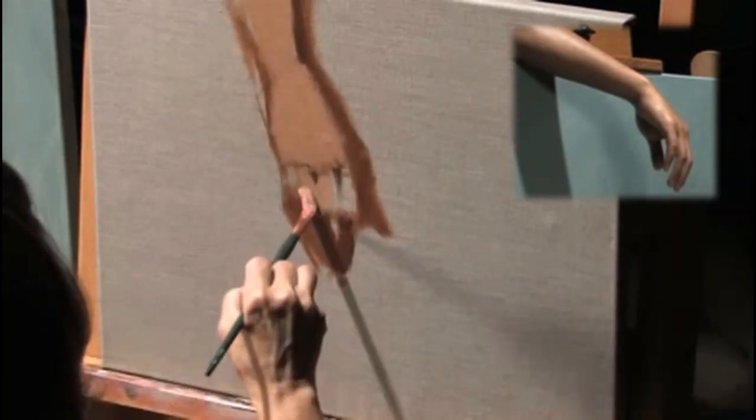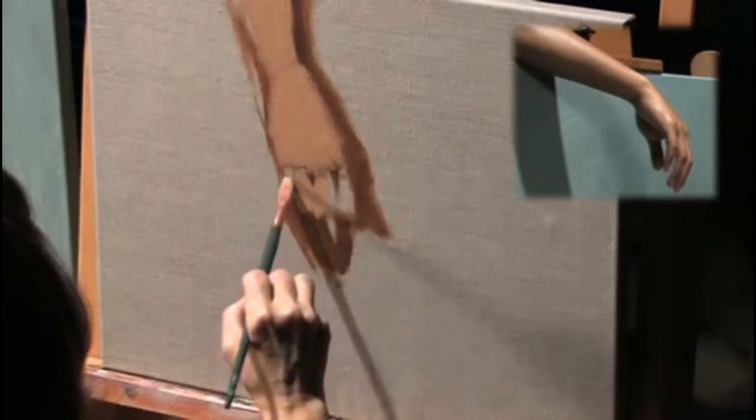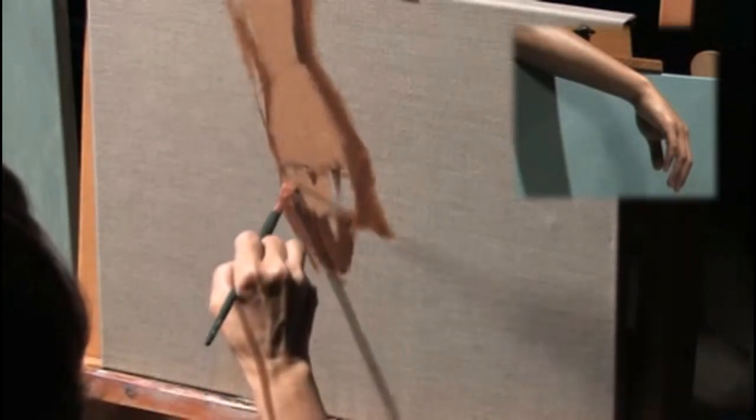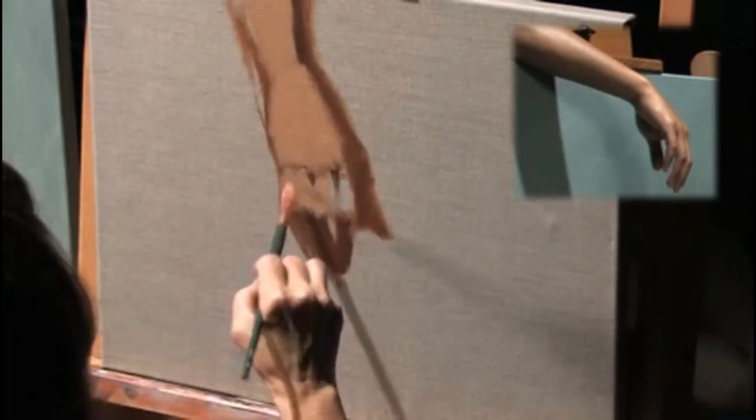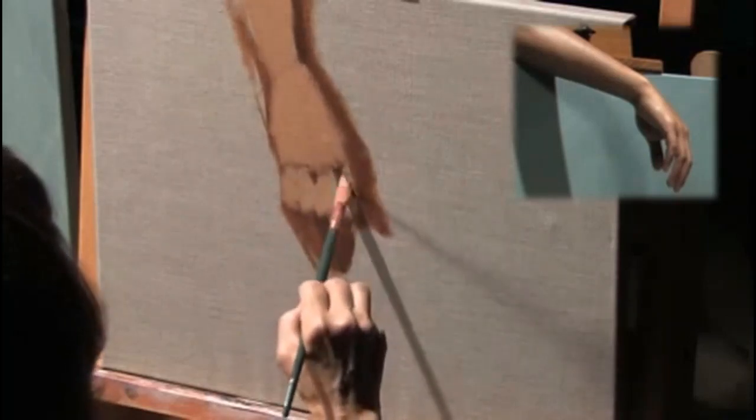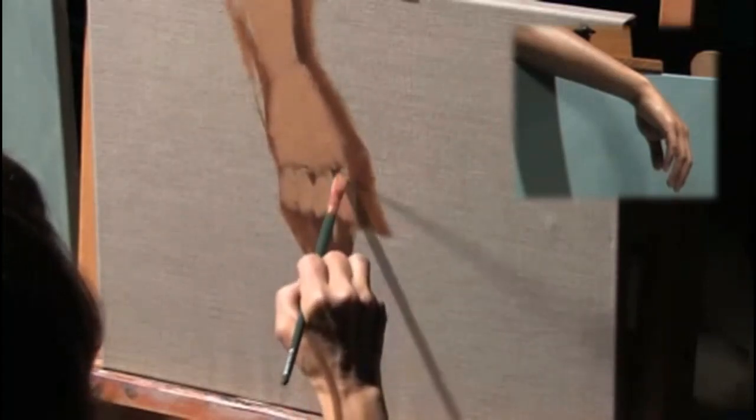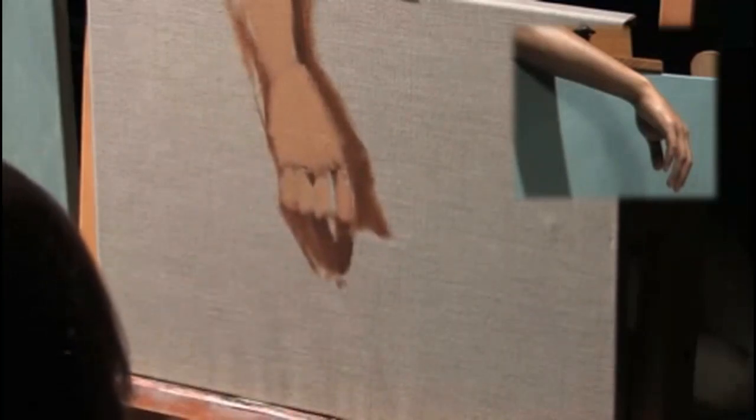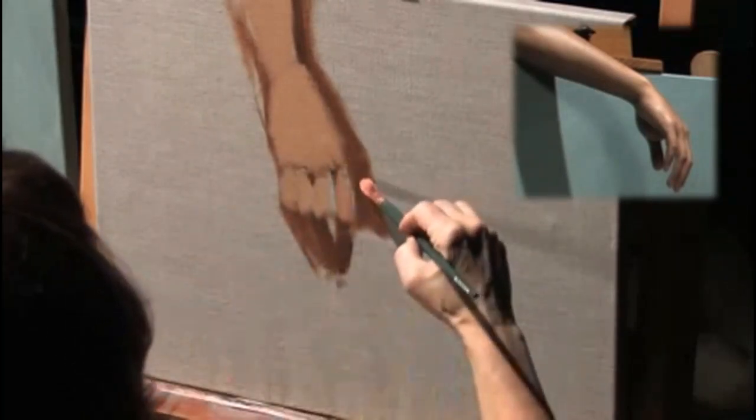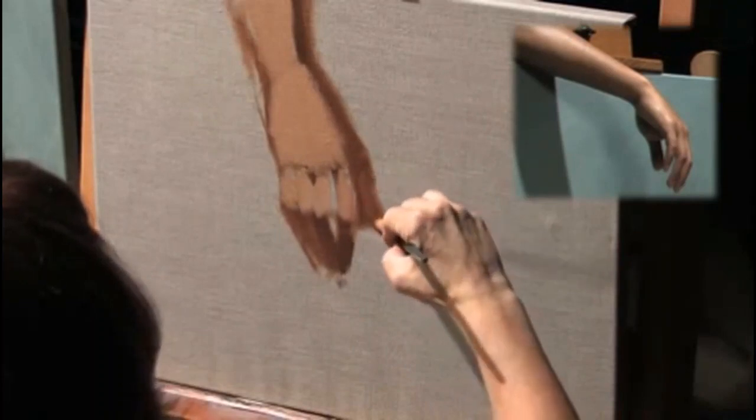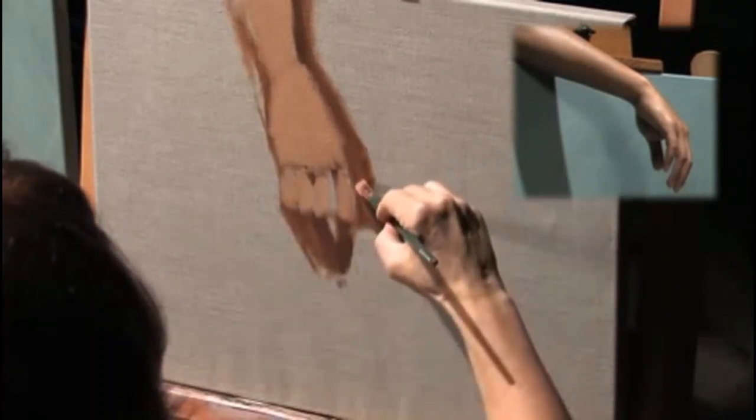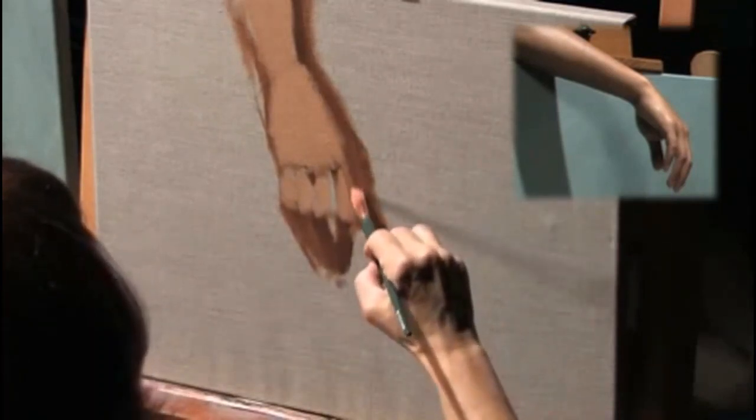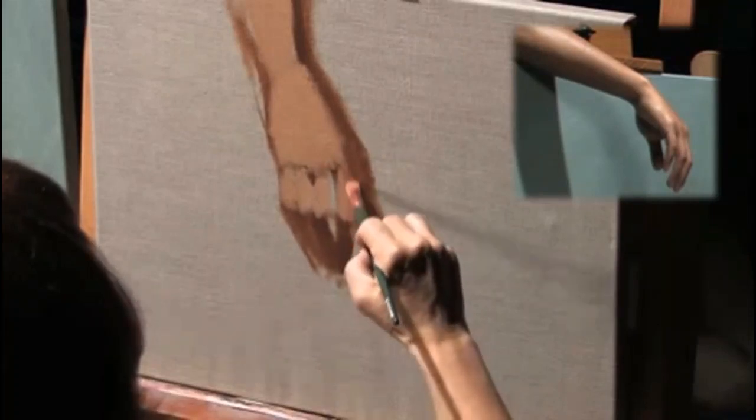another one right there, and another one right there. You can see how quickly this hand is coming together. Now in the shadow, I'm seeing just a little bit of reflected warmth in this area of the thumb, on the shadow side of this finger.